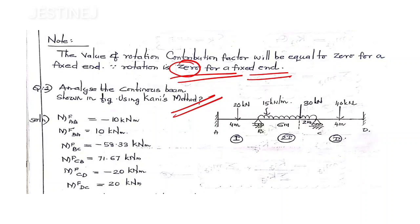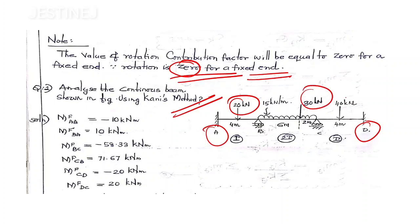Analyze the continuous beam using Kani's method. A continuous beam is given where supports A and D are fixed and B and C are roller supports. A 20 kilonewton load acts at the center, a UDL is acting on one span, a 30 kilonewton load acts over span BC, and a 40 kilonewton load also acts. The BC span is six meters and the AB span matrix is four meters.